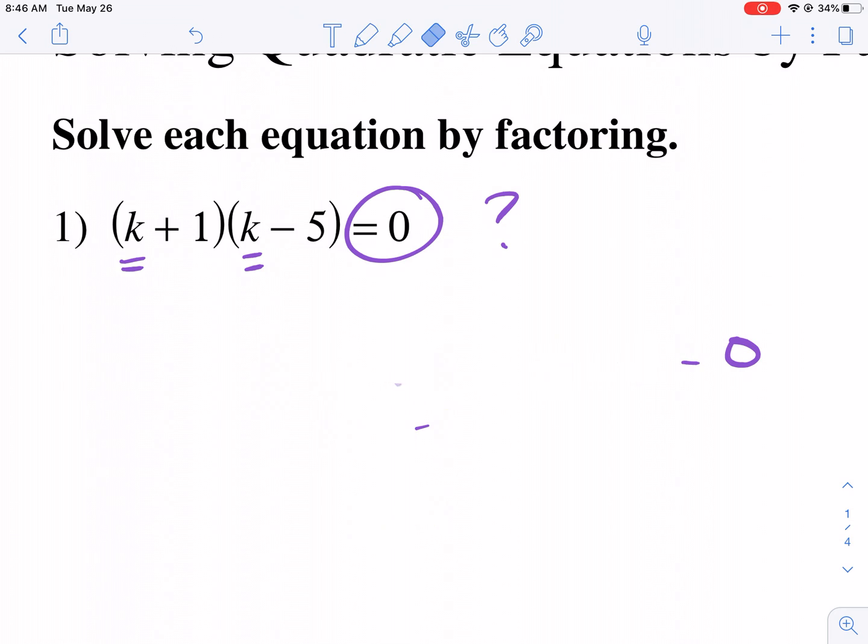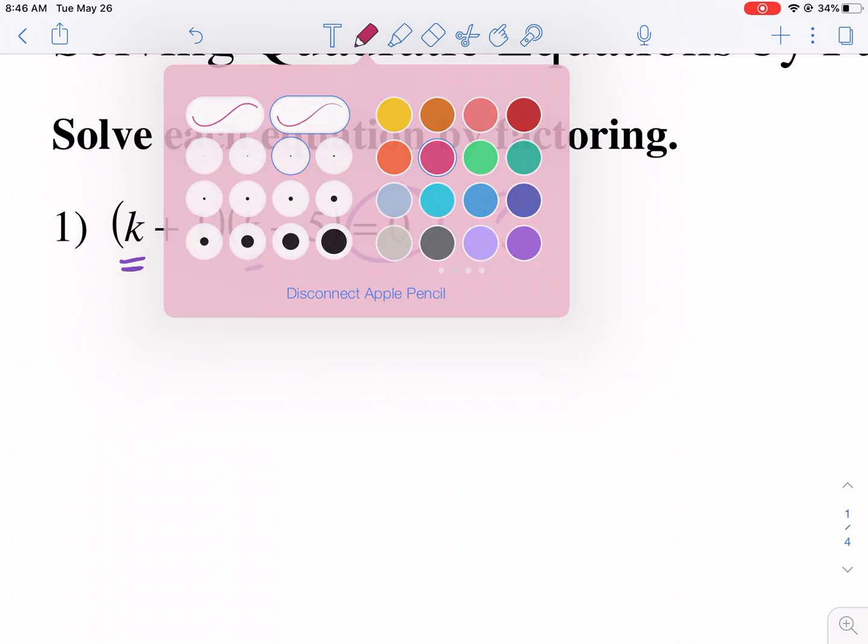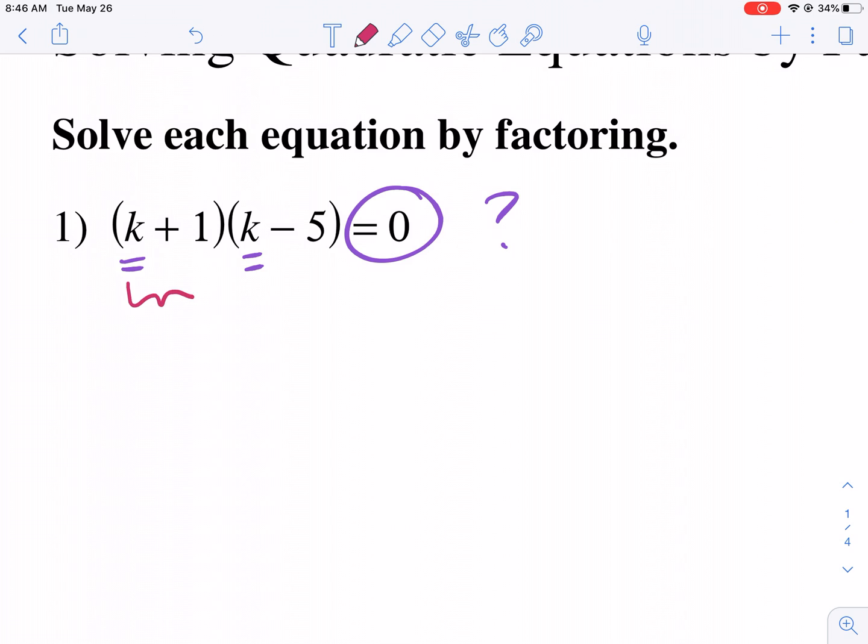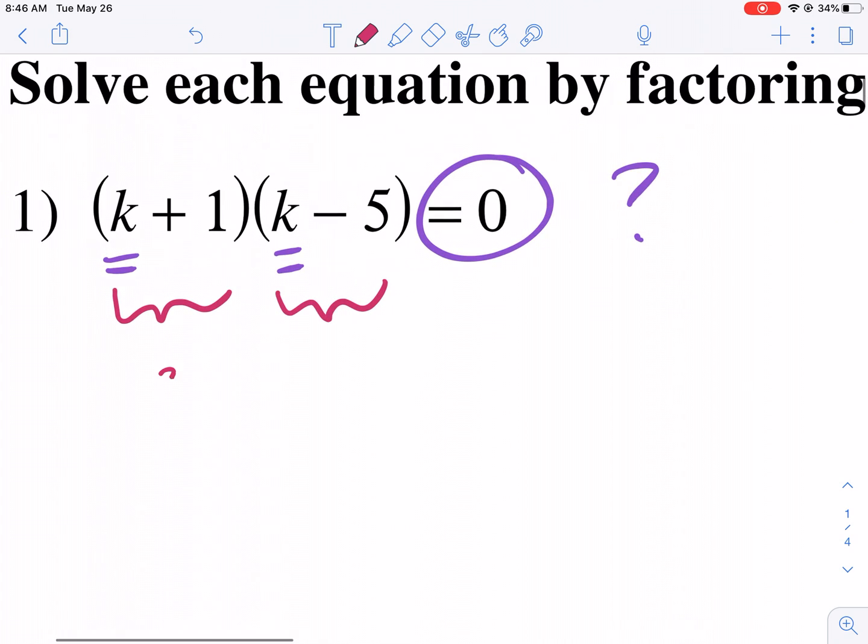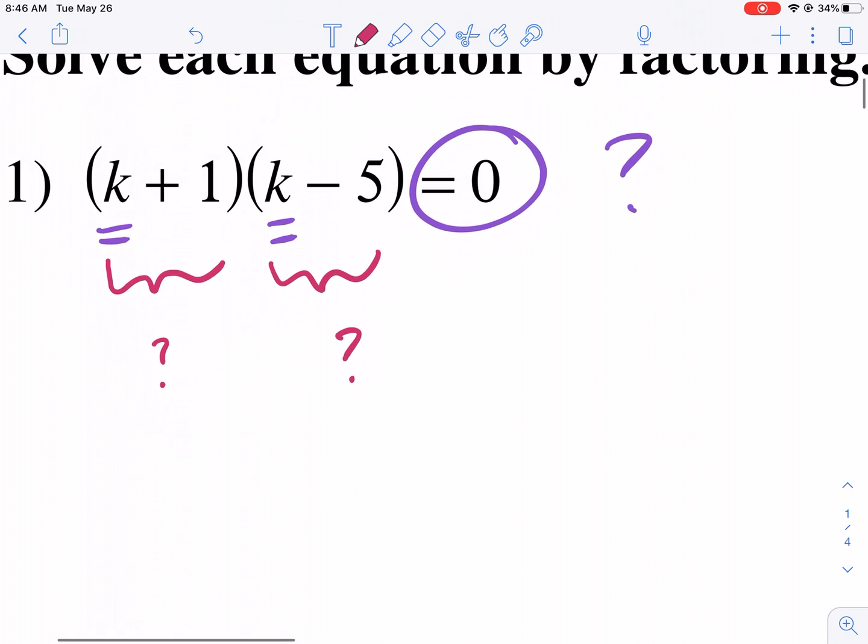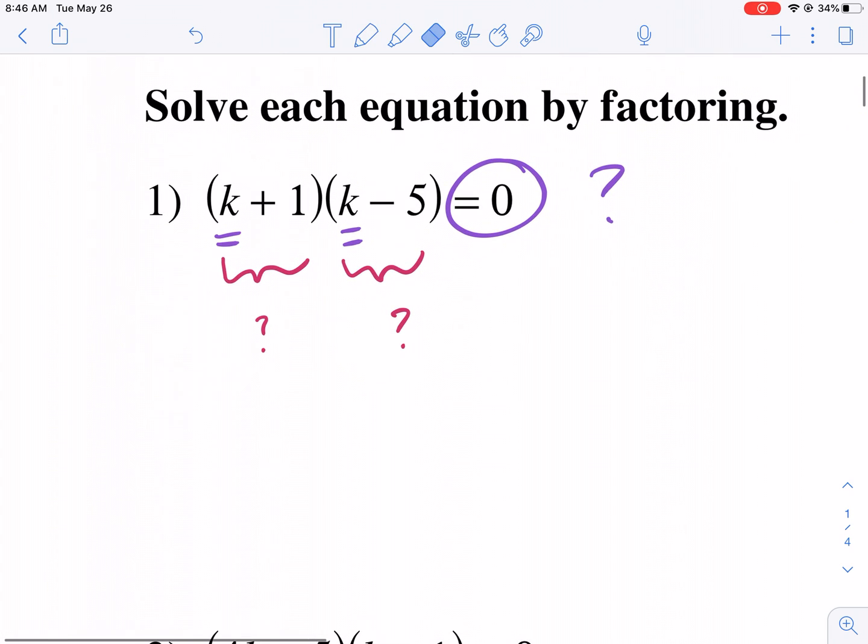So that was just an example, but now we're going to actually see how this works. Well, if we have two values, does it make a difference that we have two binomials? Not really. So essentially all this means is we are going to take each one of these values and set both of them equal to zero. So k plus 1 equals 0, or k minus 5 equals 0. So we're going to have two answers now instead of just one.